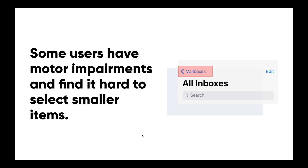Next is target areas. We need to make sure that target areas are large enough for users to select on a page. Some users have motor impairments and find it hard to select smaller items. If we look over here, the mailbox has a larger tappable area, same with the edit button. Accessibility benefits everyone — when you're on mobile, a larger tappable area just makes life easier, even without a motor impairment. Keep this in mind when you're designing in general.